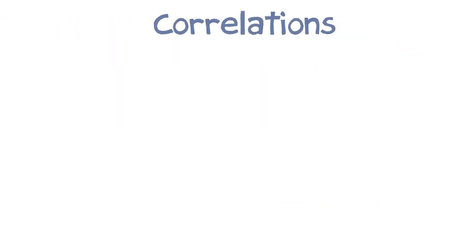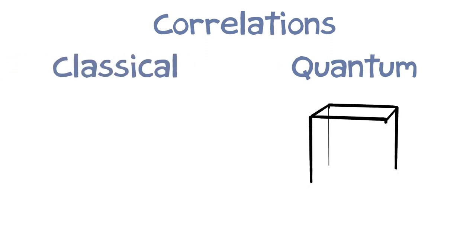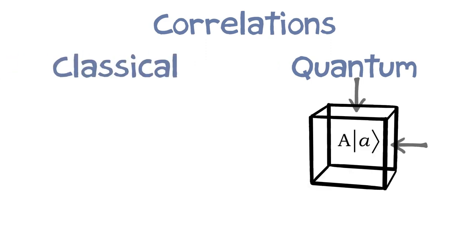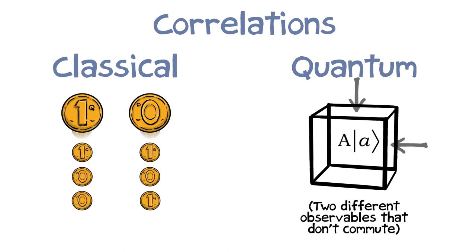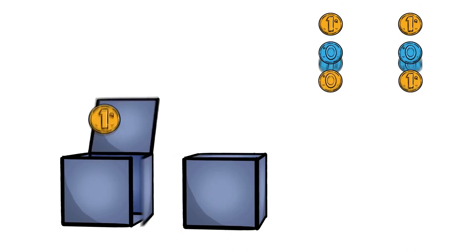The reason these quantum correlations are different than classical correlations is because we have these distinct, incompatible ways of observing the system. Classical systems can be correlated. We can flip two coins, and they're either both heads or they're both tails. No big deal. But there's just one way to look at that coin. The qubits are different. We have these two incompatible ways of looking at them. They have two ways to be correlated, either the same or different, or two different sets of doors.